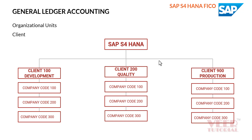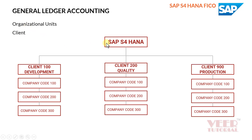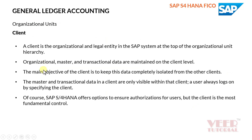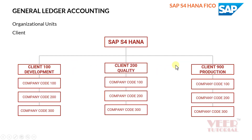This is the normal practice in the SAP system. In any S4 HANA implementation, the client is the highest organizational unit. Whenever we create any master or do any transaction in one client, it will not be available in other clients. All master data is created and transactional data is maintained at the client level only.